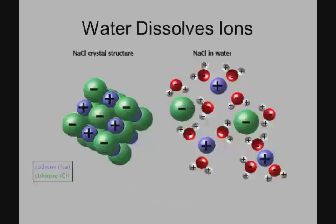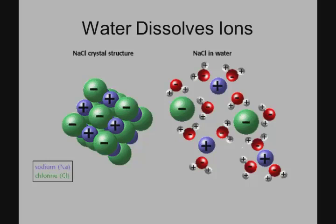Water can dissolve ions. On the left is the sodium chloride crystal structure — common table salt — made up of sodium ions and chloride ions bonded together. If we dissolve that in water, we get a more disordered arrangement. The sodium ions, which are positively charged, are attracted to the negative oxygen end of the water molecule. The negative chloride ions bond to the positive hydrogen end. Because the water molecule is so polarized — positive charge at one side, negative at the other — it has a great ability to dissolve ions.